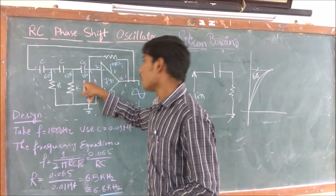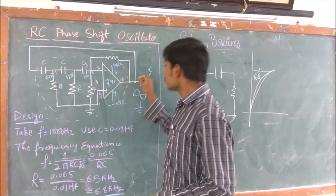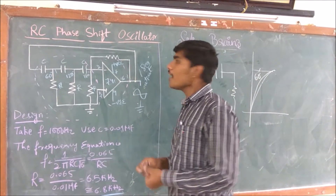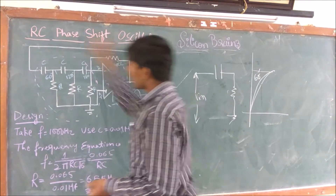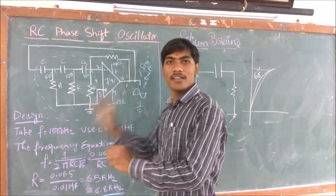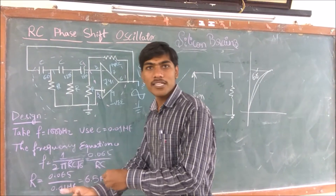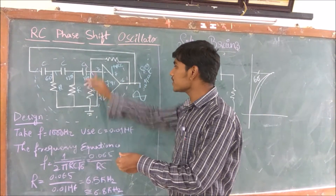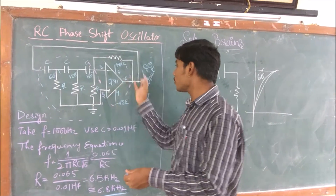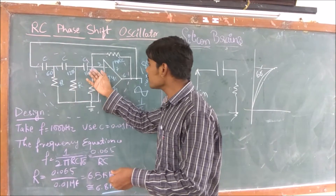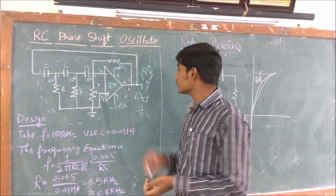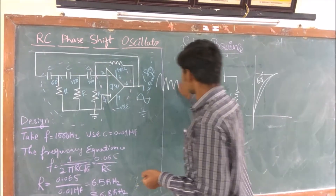The amplifier is already 180 degrees out of phase. Adding another 180 degrees from the RC network gives a total of 360 degrees, which means the signal is back in phase with the output. The signal then starts gaining and stores continuous oscillations.